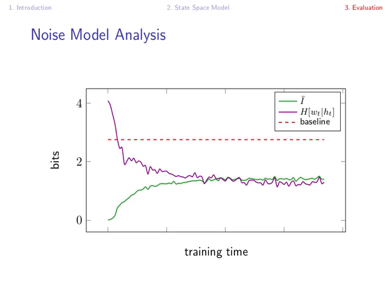The purple line shows you the observation model entropy during training. The dashed red line shows you the entropy on the observation model of a baseline. So indeed, we have lower entropy in the observation model and at the same time, in green, you see the mutual information increasing.